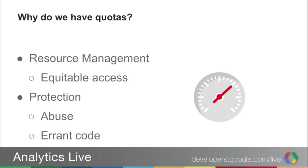So why do we have quotas? Like a lot of other APIs within Google and outside of Google, we have standard quotas and API-specific quotas. The main purpose for the quotas is to manage resources. At Google, we have limited servers, limited resources, and we need to make sure that everybody — all the developers out there — are getting equitable access, sharing the resources in a fair manner.